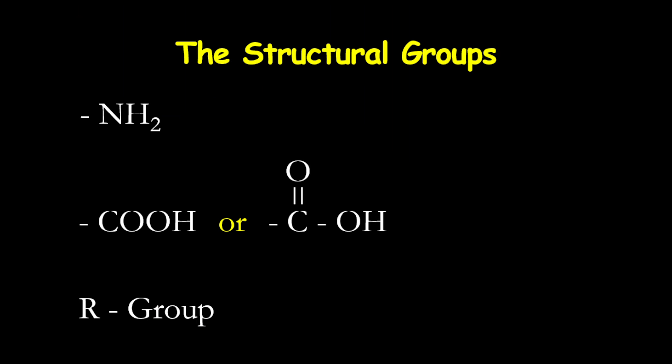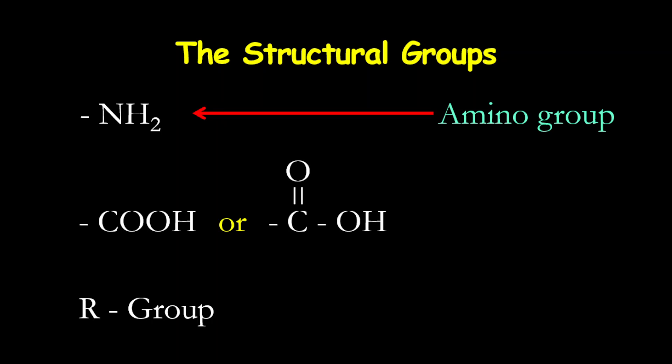There are three groups that we need to know. We have the amino group, which is NH2 — this is also called the amine group. We also have the carboxyl group, which is COOH. The carboxyl group is an acidic structure, and this is why it is called an amino acid. The amino group and the carboxyl group are the two primary functional groups of an amino acid.